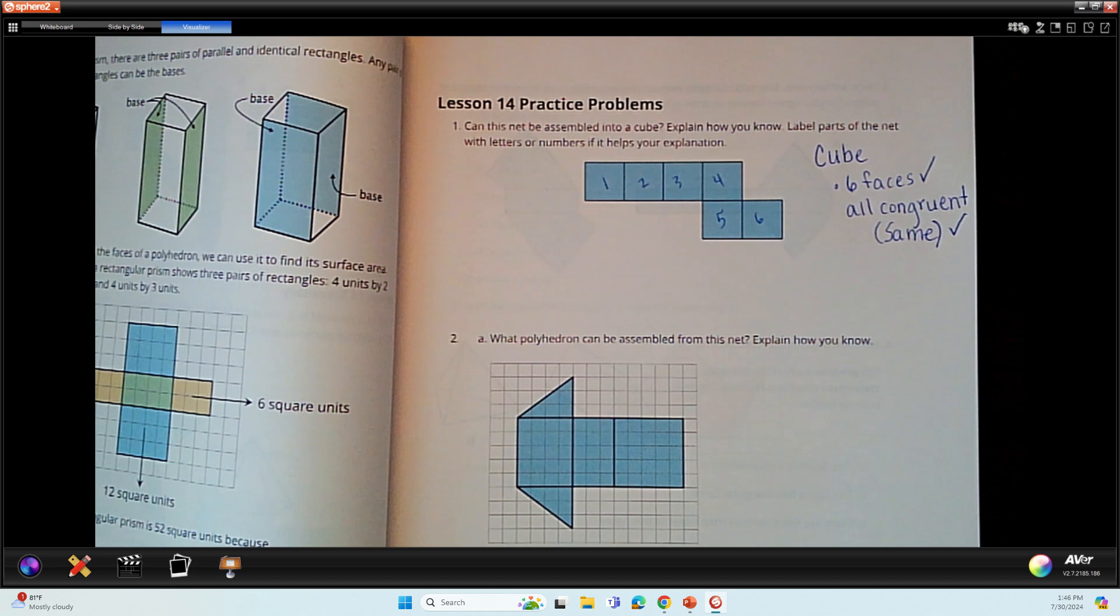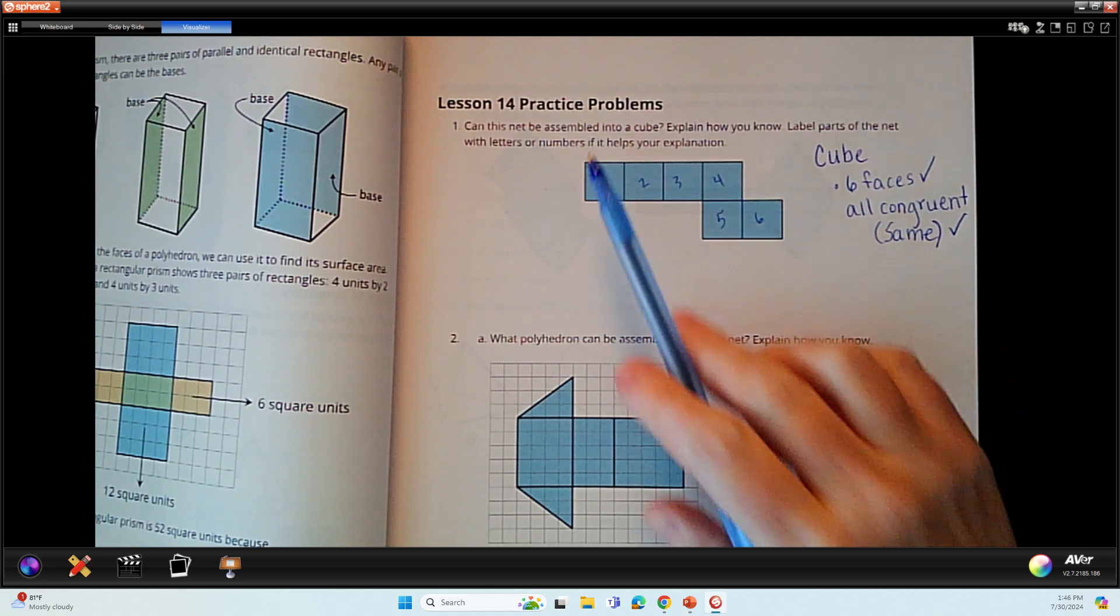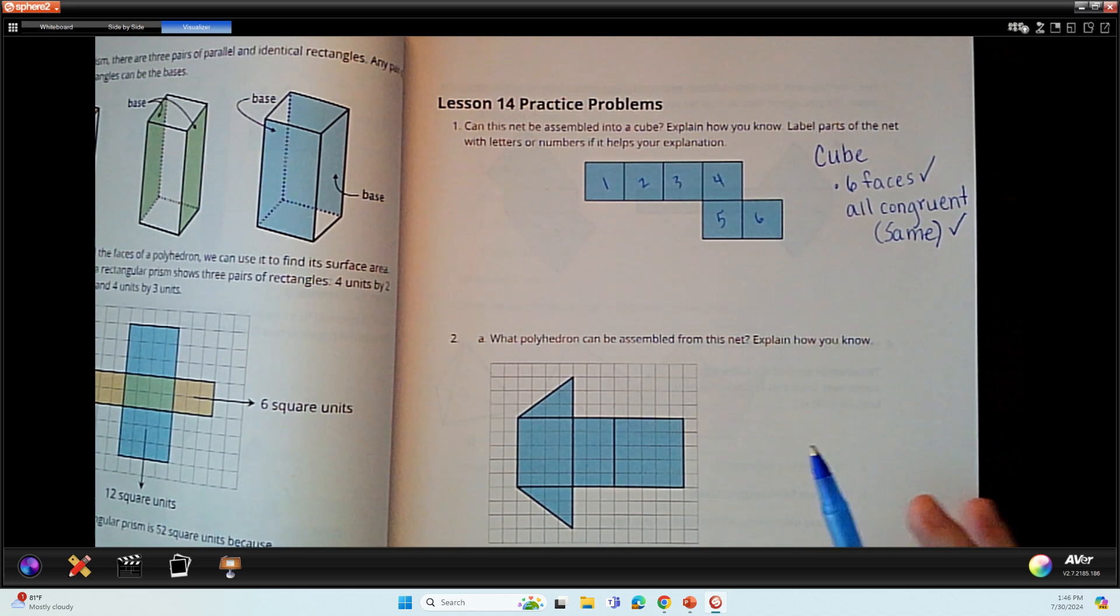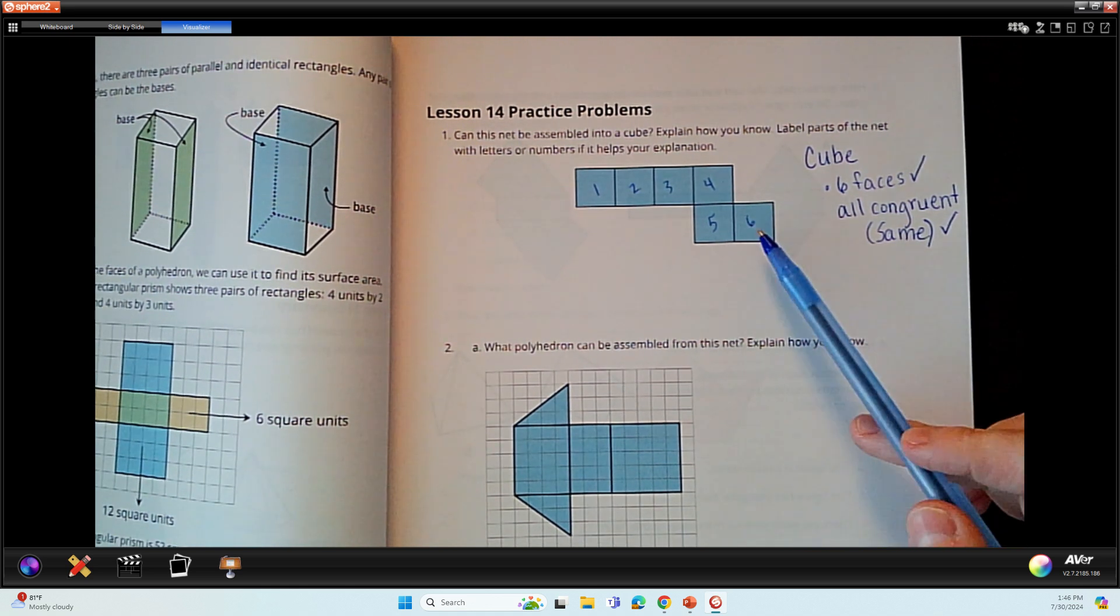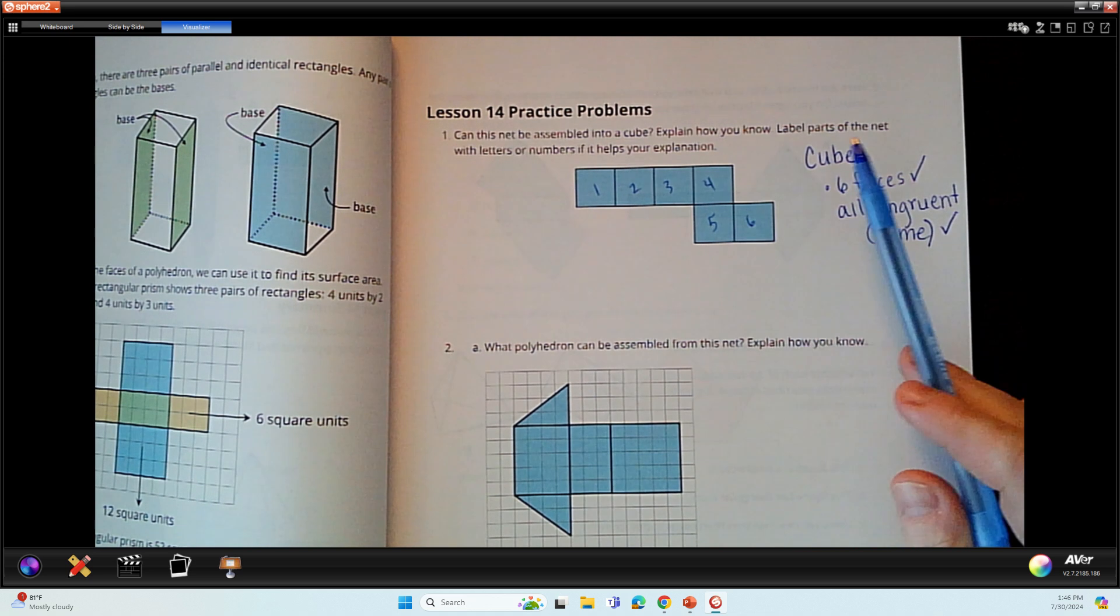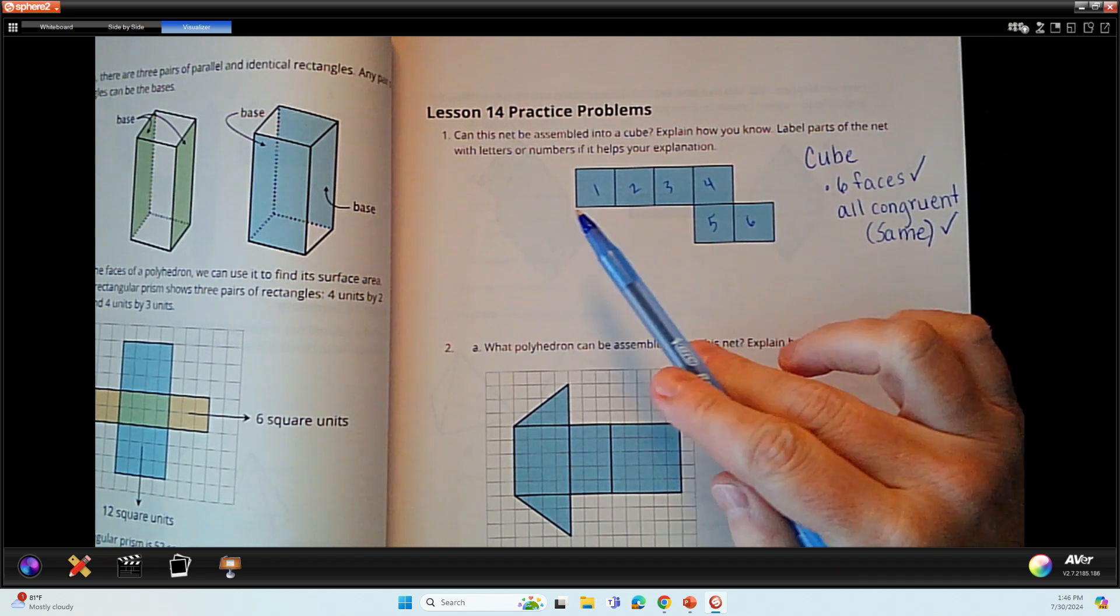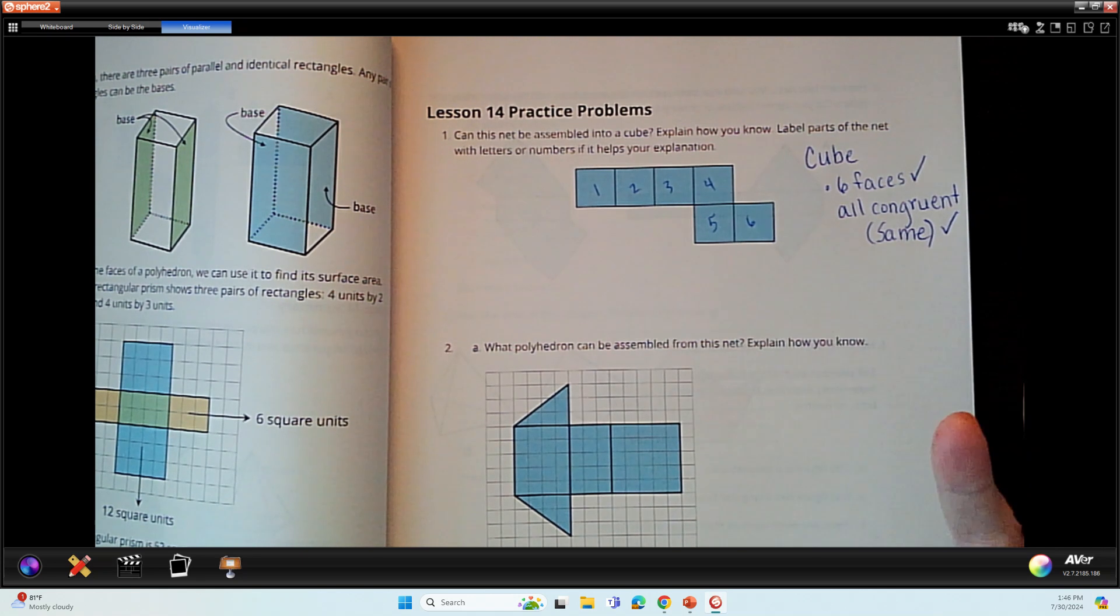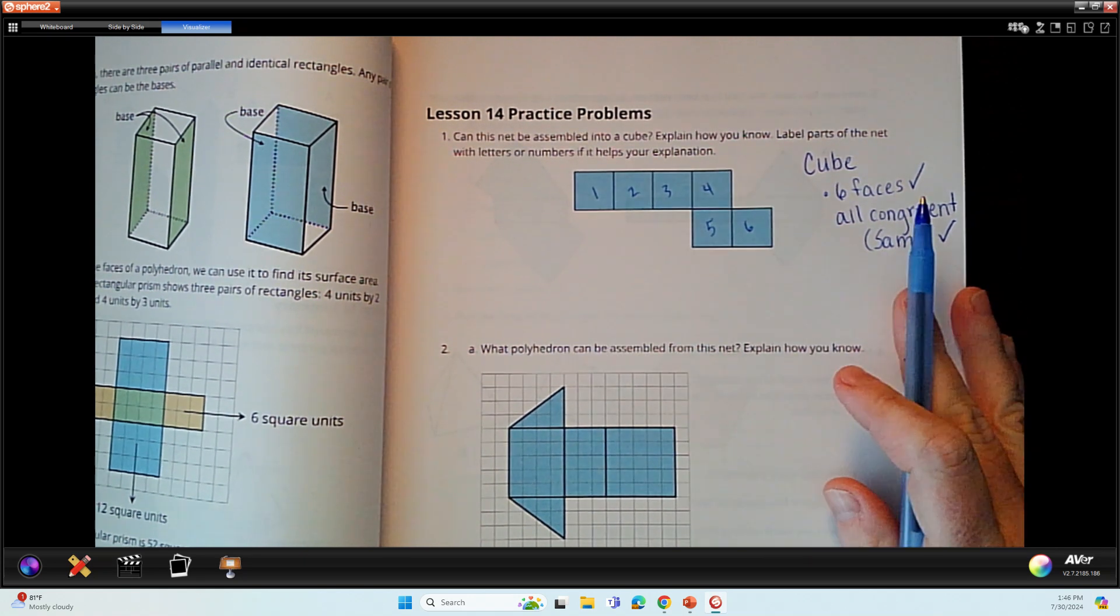Okay, in this practice problem, lesson 14 practice problems, we're going to take a look at nets and see if this will fold up to make a cube. Now, this is tricky because this is a two-dimensional shape on flat paper that we're trying to visualize and see if it will fold up to a cube.